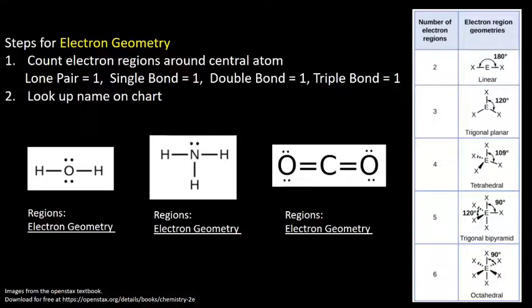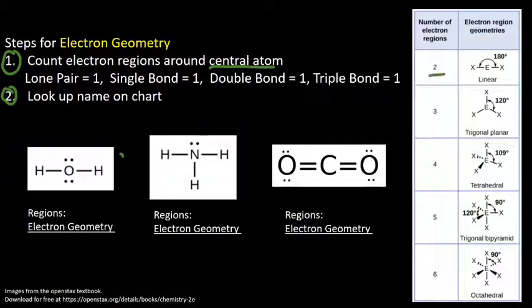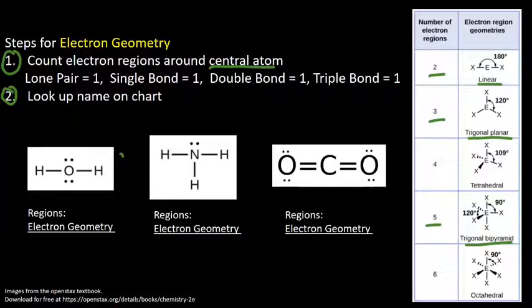First, electron geometries. Two steps here. Step one, we're going to count the regions around the central atom. Step two, we're going to look up the name of that on the chart. You'll notice over here: two regions is always a linear electron geometry, three regions is trigonal planar, five regions is trigonal bipyramidal, and so forth. We count the regions and we look it up.